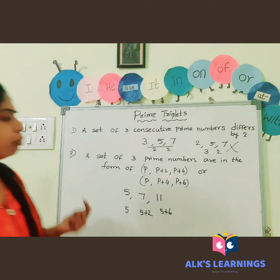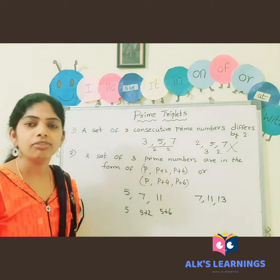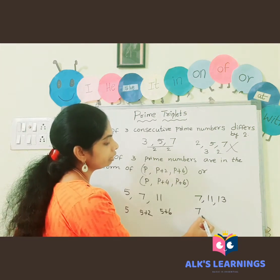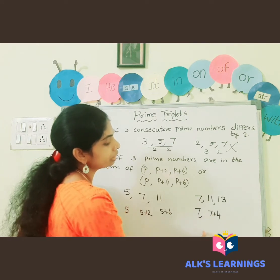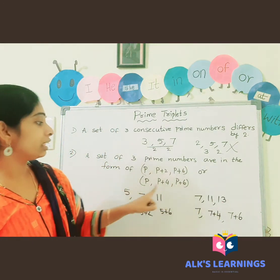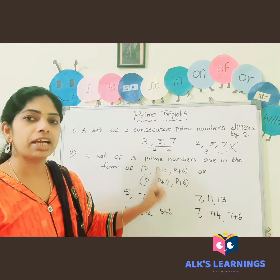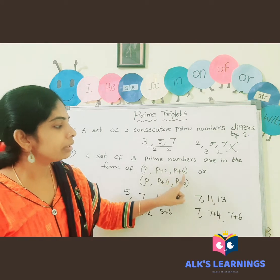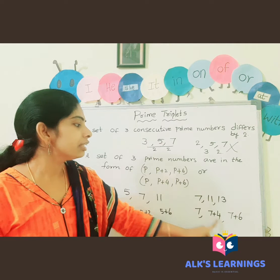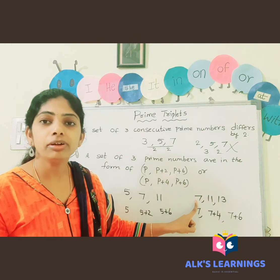Let's take one more example: seven, eleven, thirteen. Seven plus four is eleven, and seven plus six is thirteen. So it satisfies the condition P, P+4, P+6. If a set of three prime numbers satisfies either P, P+2, P+6 or P, P+4, P+6, then those numbers are called prime triplets. So seven, eleven, thirteen are also prime triplets.